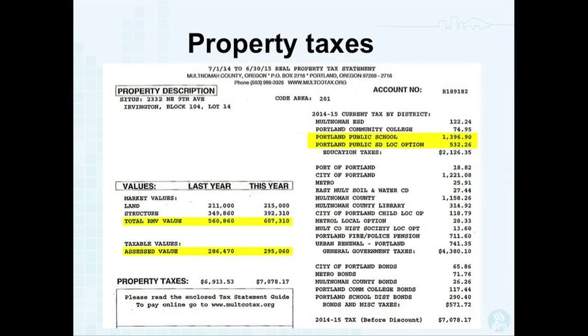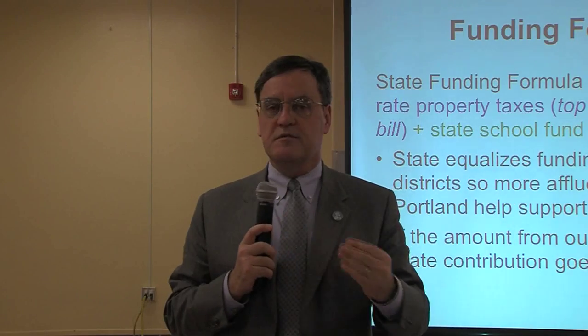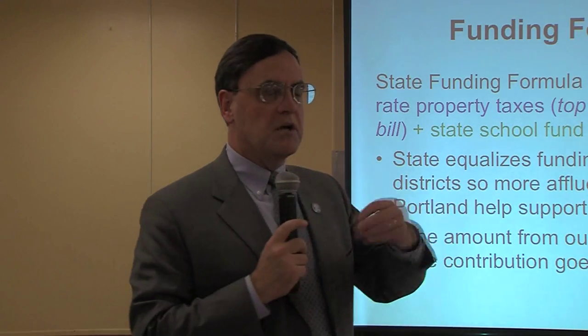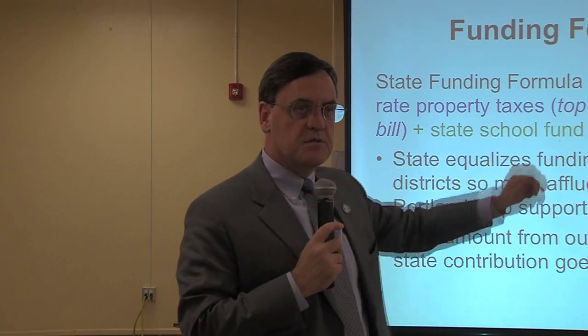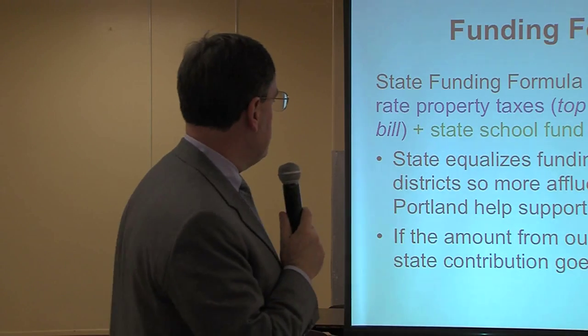On the right-hand side of the property tax statement, you'll see two highlighted numbers for Portland Public Schools. The top, larger number is the permanent rate property tax — that's the money that's part of the state school fund calculation. The number below it, the smaller number, is the local option. That three-quarters of our revenue is allocated by the state using a funding formula based primarily on number of students.